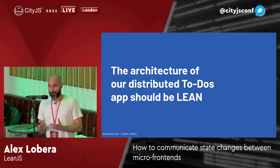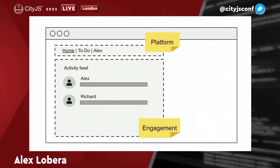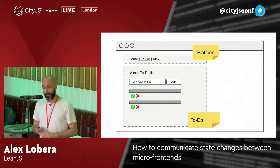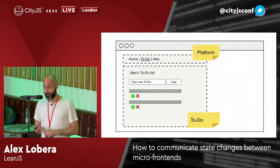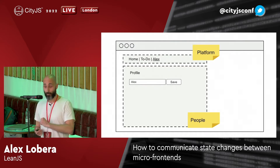Our to-dos app should comply with this LEAN architecture. Let me share some wireframes we've got so far — we're a very lean team, we like to ship things quickly and get feedback. So we have three pages. The first page has an activity feed displaying what your friends are achieving, plus a navigation bar — both owned by two different teams. The next page has the to-do, where we can create and display to-dos, owned by a different team. And last but not least, we have the profile, very simple at the moment, owned by the people team.